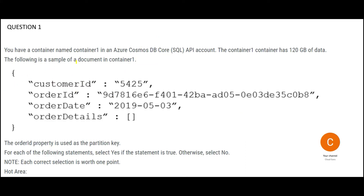The first question: you have a container named container one, part of a Cosmos DB Core SQL API account, with 120 GB of data. In the RDBMS world, a table has a well-defined structure — if you have four columns, insert statements must supply all four. In the NoSQL document world, however, the number of fields is not fixed; you can keep incrementing fields based on your record requirements.